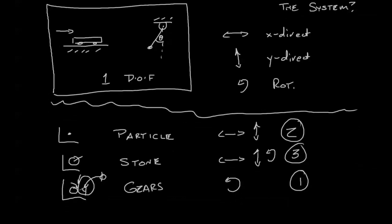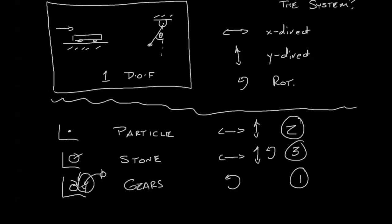Now we can also use this idea with more complex systems. For example, we can imagine a double pendulum. In this case we have the first angle theta and the second angle phi. So in this case we have a pendulum. We really have two rotations, so we have a two degree of freedom system.